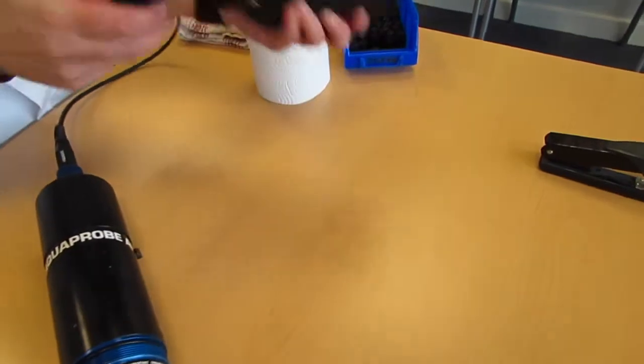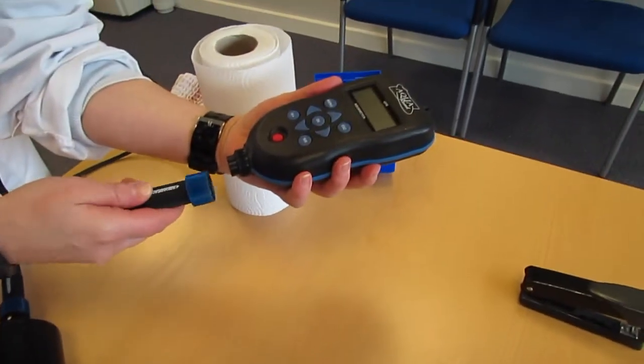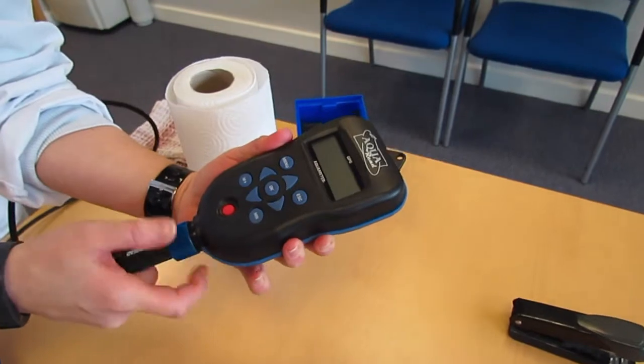The other end of the cable goes into the meter. Again the aqua-read symbol faces up. Firmly push this into the meter and screw down the blue collar.